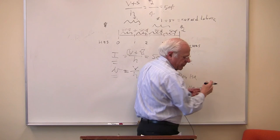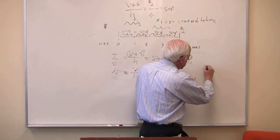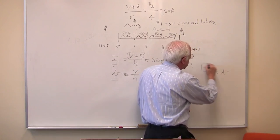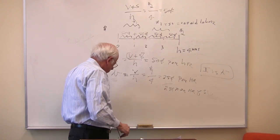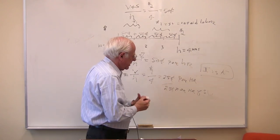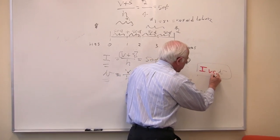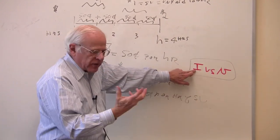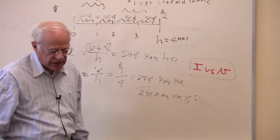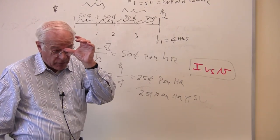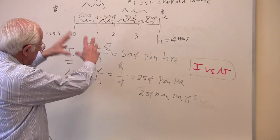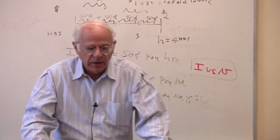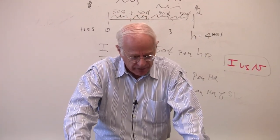On a per-labor-hour basis we have I — the intensity of exploitation — versus little v, the wage per hour for the worker. The more the capitalist can increase the intensity and pay the same wage, the more surplus will arise in this relationship between buyers and sellers of labor power. That's the argument Marx has developed to explain the source of surplus value, and we'll build upon that next time.